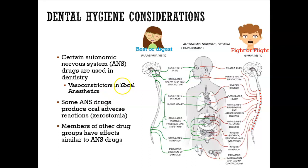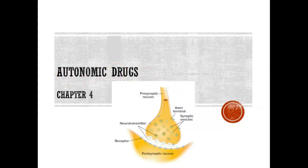For example, when we're doing local anesthetics — say a client comes in and when we're cleaning or debriding their teeth and they're very sensitive — we may ask the dentist to come and apply local anesthetic and numb the area. One of the ingredients in local anesthetic is basically an autonomic drug, which is what we'll learn about. So in dentistry, we do use autonomic drugs.